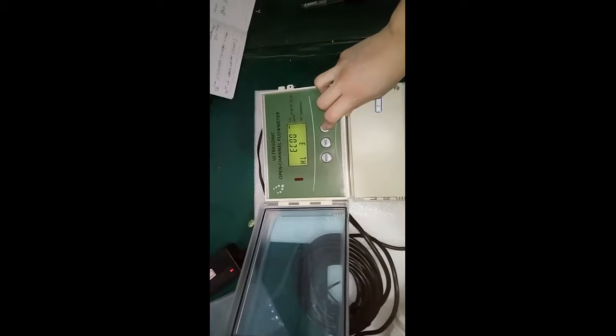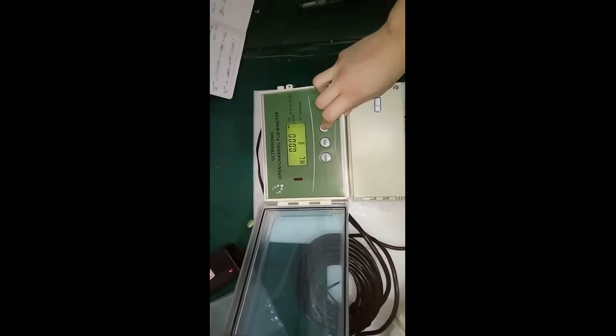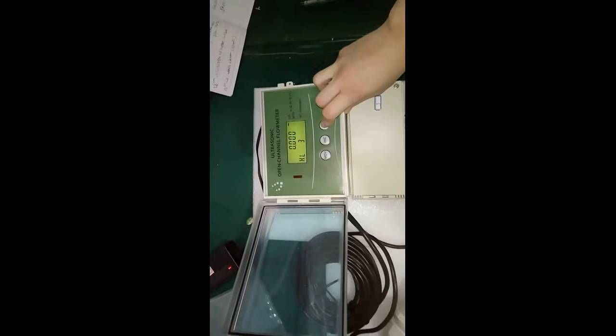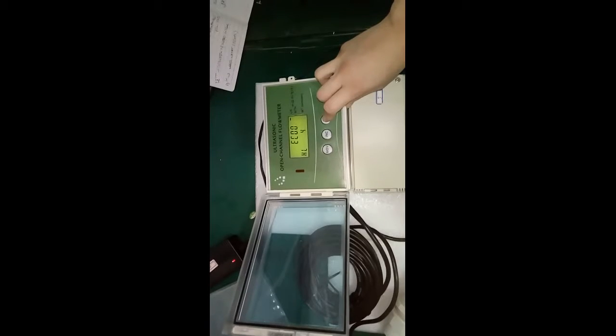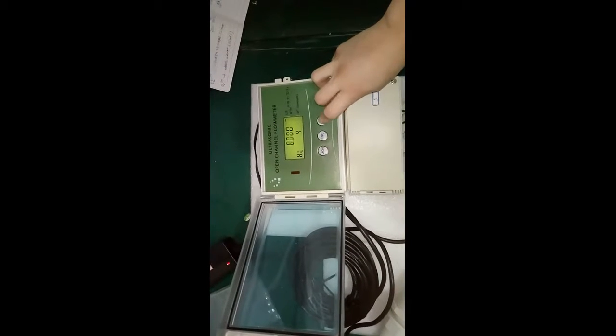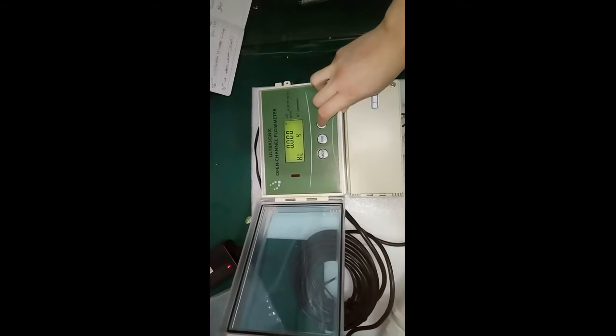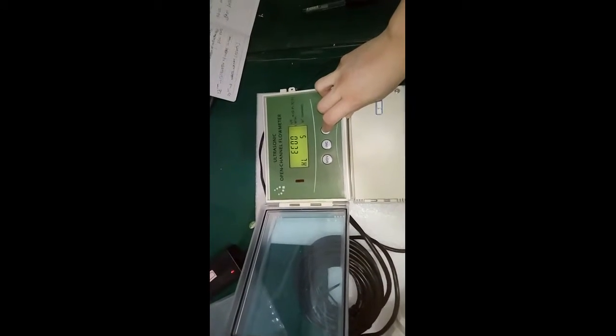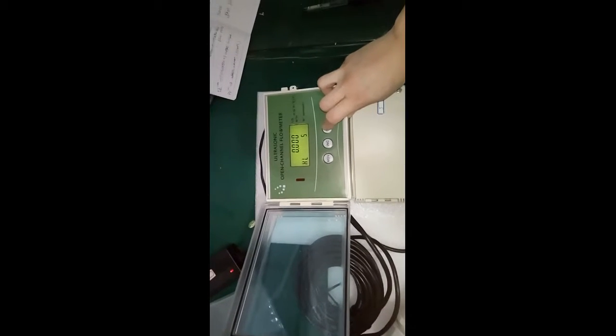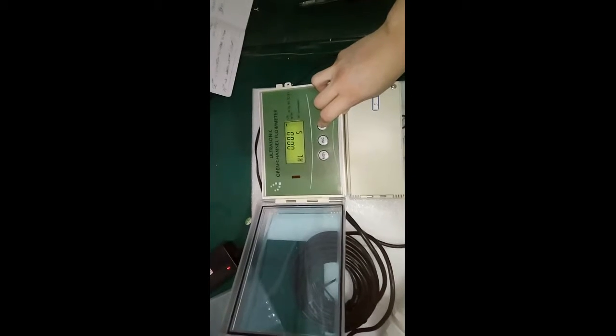This is the status of delay number three. This is the on and off point value of relay number three. This is the status of delay number four. This is the on and off point value of delay number four. This is the status of delay number five. This is the on and off point value of delay number five.